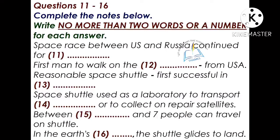Everyone knows that we have achieved a huge amount in terms of space exploration. The space race between ourselves and Russia went on for nearly 20 years, but we were the first to land a man on the moon. At that time, the space race was very close, and the Russians very nearly got to the moon before us. For me, the most exciting invention — and the invention that really showed we were ahead in the space race — was the reusable space shuttle.